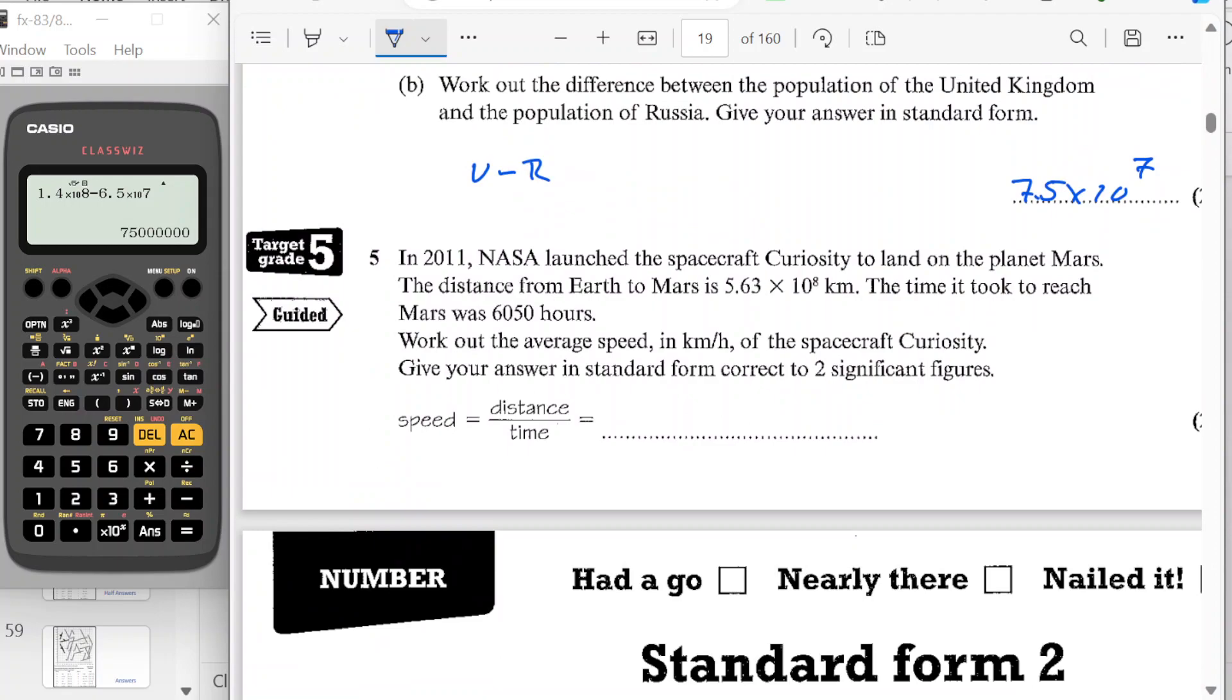And for question five, we've got NASA, a spacecraft to the planet Mars, the distance from Earth to Mars. And it took this time, work out the speed. So just on my calculator, I'm going to do this value, 5.63 times by 10 to the 8. And I want to divide that by 6,500. So that's going to give me, so I'm going to write that as 9.3 times by 10 to the power 4.